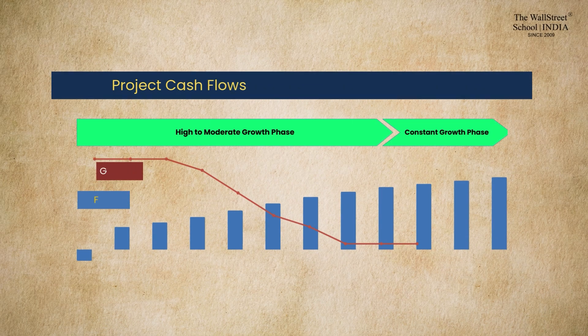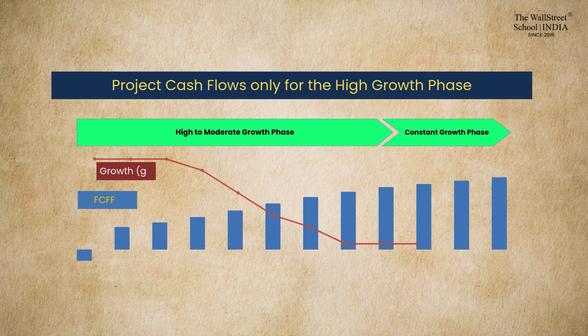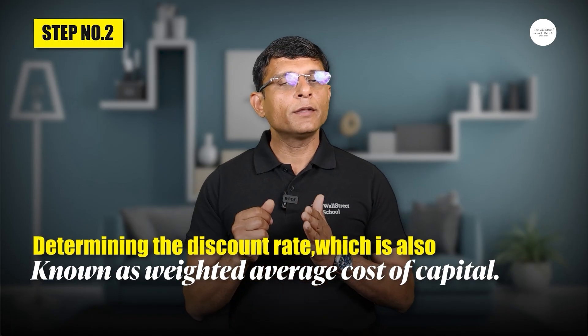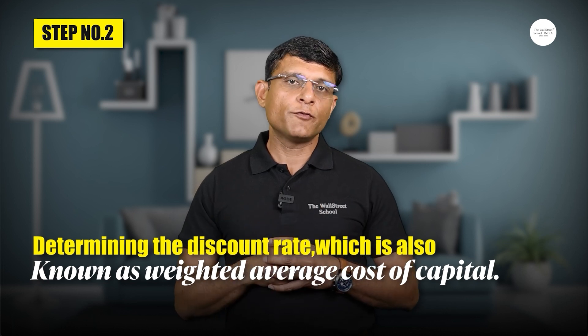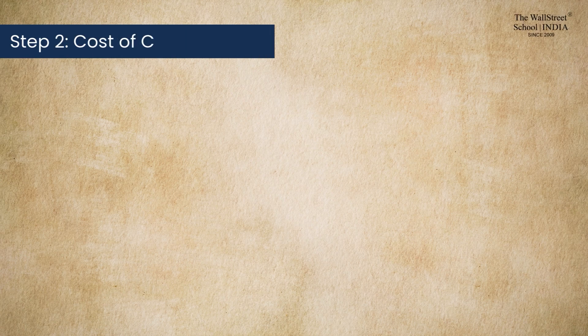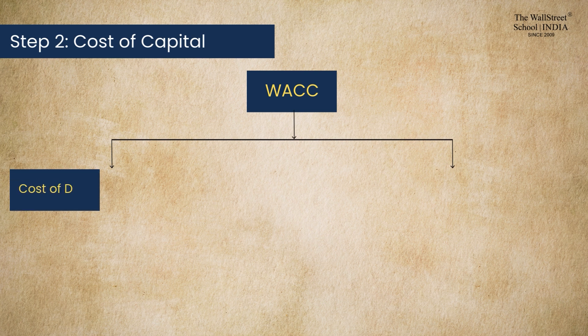Assuming that over this period the company's high growth phase would be over and it will reach a settled, constant growth phase. Step two: determining the discount rate, also known as the weighted average cost of capital (WACC). The cost of capital consists of two components: cost of debt and cost of equity.